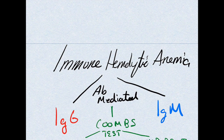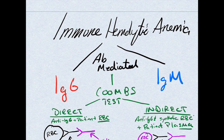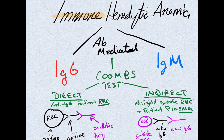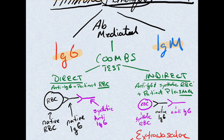In this video we're going to be talking about immune hemolytic anemia, sometimes known as autoimmune hemolytic anemia. The name tells you a lot — it's immune mediated, involving the body's immune response. You can break this concept down into anemia from IgG or from IgM, where red blood cells are breaking down because of these antibodies.